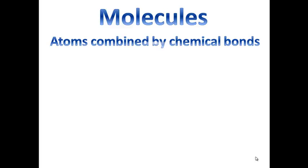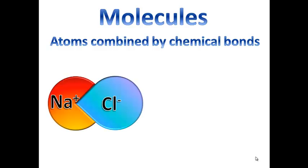Molecules are atoms combined by forming chemical bonds. There are two primary types of chemical bonds that form molecules. In an ionic bond, atoms completely gain or lose electrons to become charged particles called ions. Ions of opposite charges are then attracted to each other to form an ionic bond.